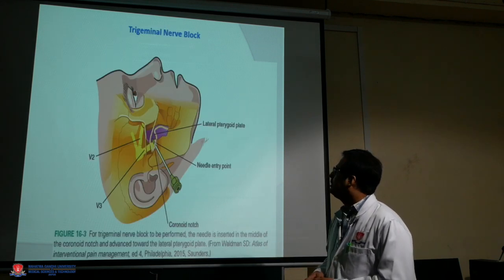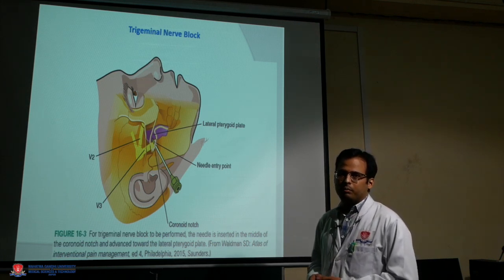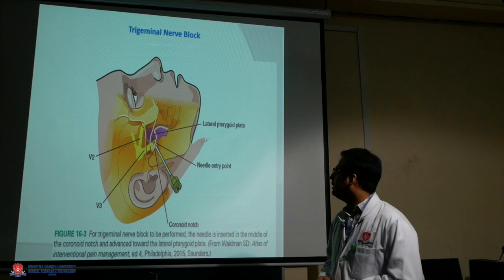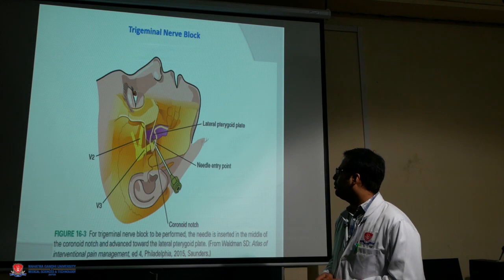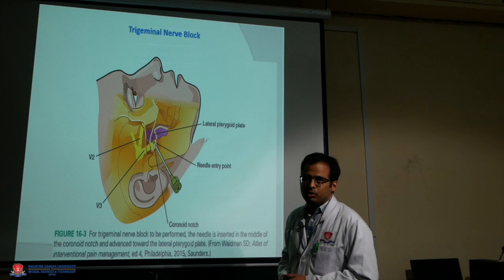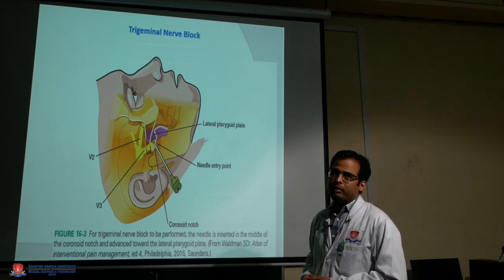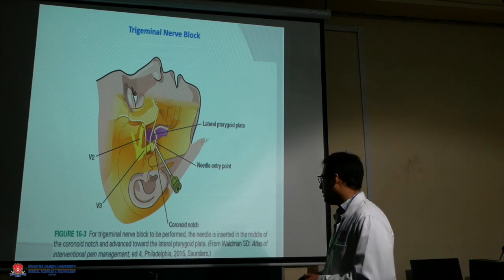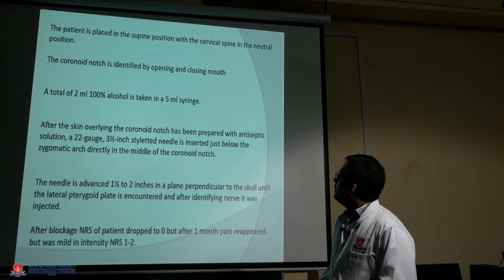This image shows a trigeminal nerve block — mandibular, maxillary, or ophthalmic division — performed in head and neck cancer patients. This is the needle and the needle entry point. We hit the lateral pterygoid plate, targeting the V3 mandibular nerve, blocking it either through steroid and local anesthetic or performing complete chemical neurolysis using 100% absolute alcohol.